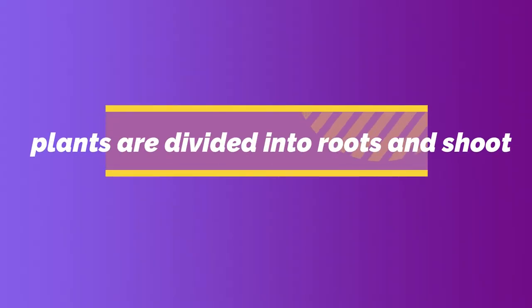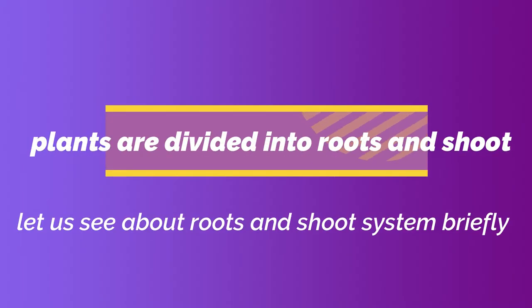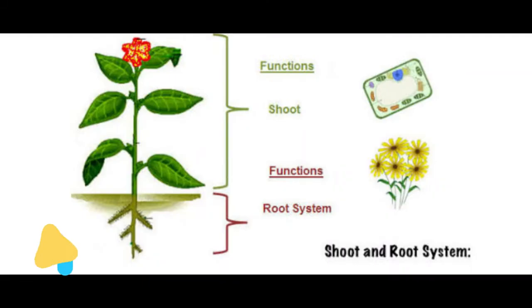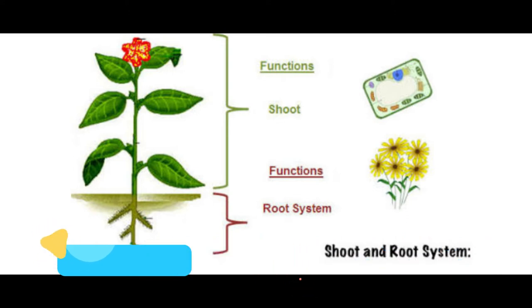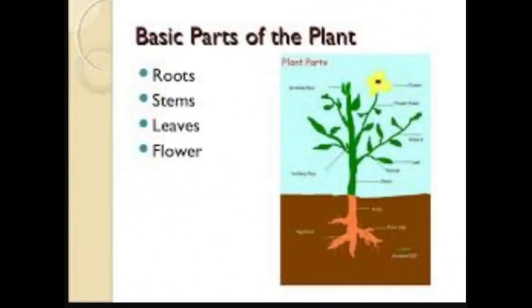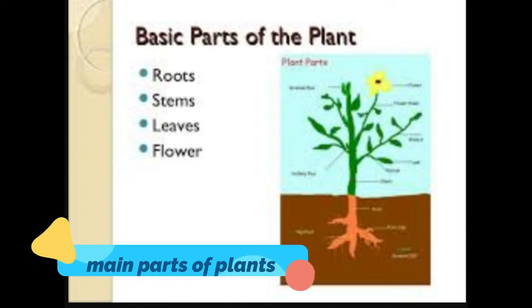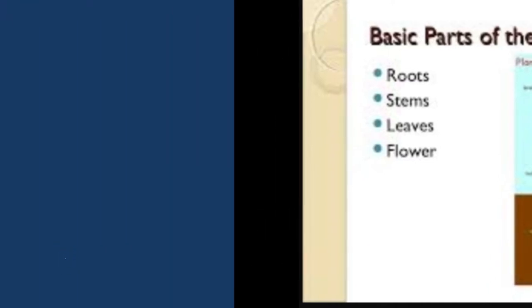Plants are divided into roots and shoot. Parts that grow below the ground are called roots. Parts that grow above the ground are called shoot system. The other main parts of plants are root, stems, leaves, and flowers.